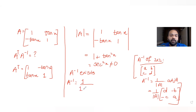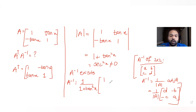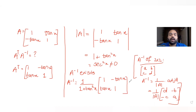Applying this to our matrix A, A inverse becomes 1 over (1 + tan²x) multiplied by the adjoint. The d and a elements remain 1 and 1. Then -b gives -tan x and -c gives tan x. So we now have A inverse computed.